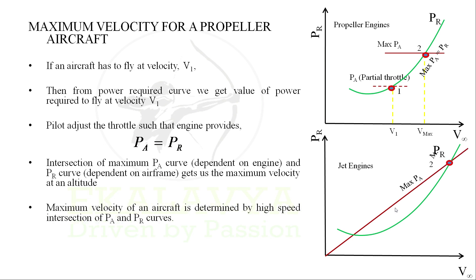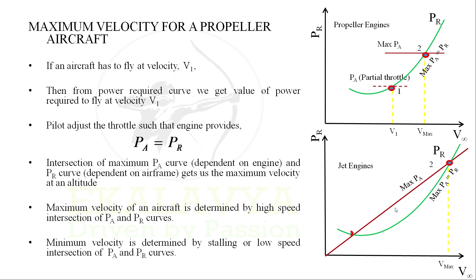So, maximum velocity of an aircraft is determined by the high-speed intersection of the power available curve and the power required curve. On the contrary, the minimum velocity is determined by stalling, or the low-speed intersection of the power available and power required curves.